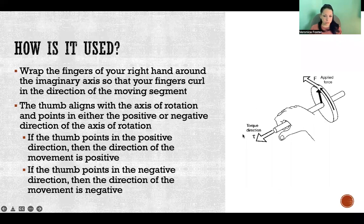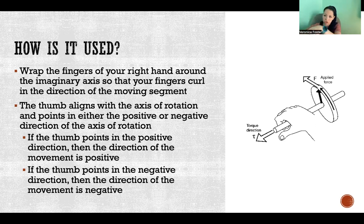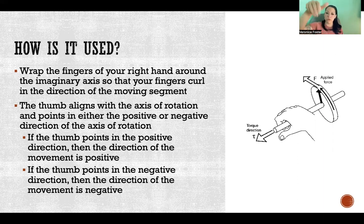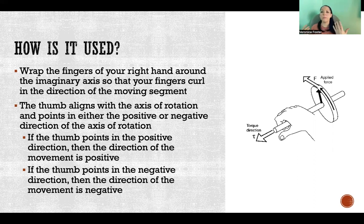Now that we've determined the axis of rotation and which segment is actually moving, you're going to use your right hand. Wrap the fingers of your right hand around that axis of rotation with your fingers curling in the direction of the moving segment. That's where people get this wrong most often — they're not curling in the direction of the movement, or they're not doing it according to the correct segment that's actually moving. If you're doing it based on the wrong segment, you're going to have the sign reversed. You need to figure out which segment is moving and curl your fingers in that direction. Whichever way your thumb is pointing tells you whether it's positive or negative — if the thumb points in the positive direction, that was a positive direction of movement; if it's pointing in the negative direction, the movement was negative.